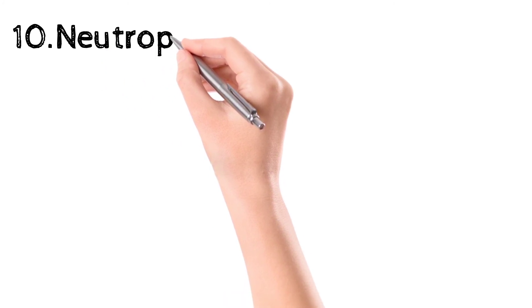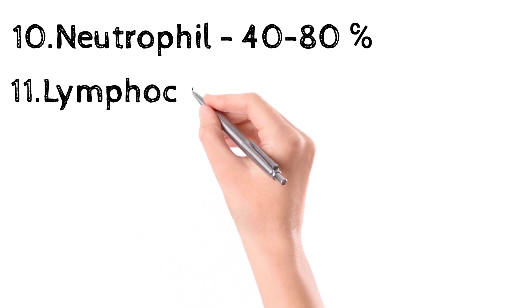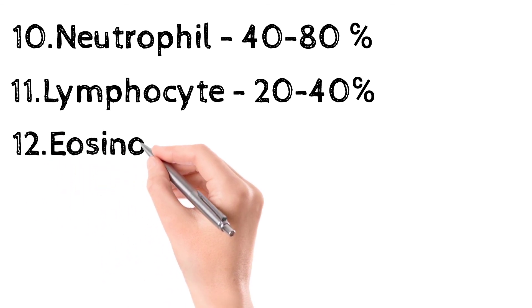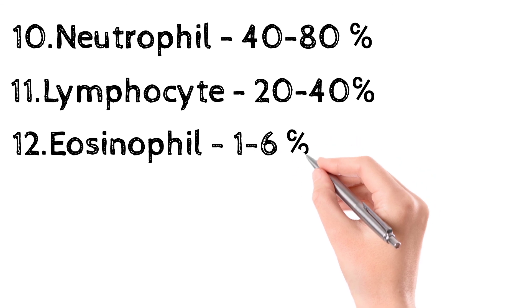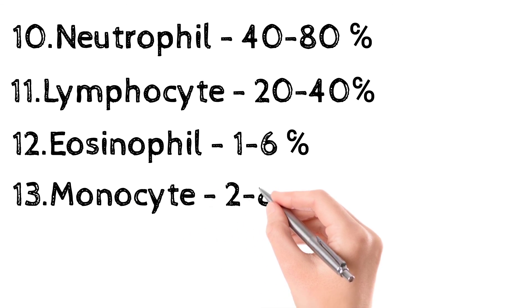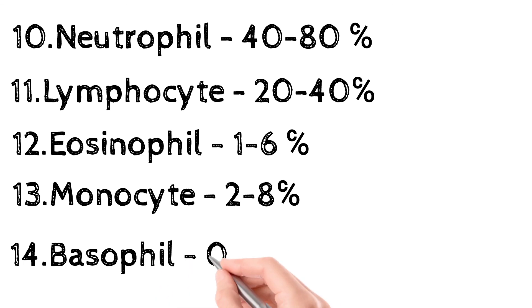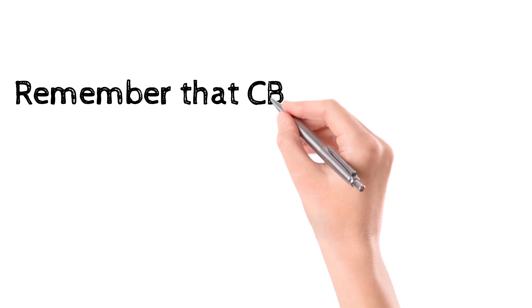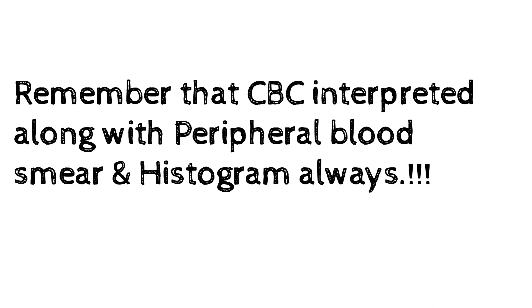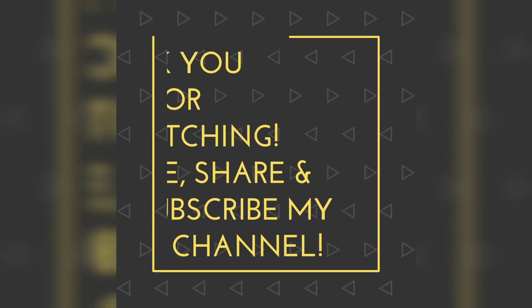Blood indices normal ranges have been covered in a previous video — check the playlist. In the differential count, the normal range of neutrophils is 40–80%, lymphocytes 20–40%, eosinophils 1–6%, monocytes 2–10%, and basophils are not typically seen in peripheral smear — should be 0 in CBC, not more than 1. Always remember that CBC must be interpreted along with the peripheral blood smear and histogram.